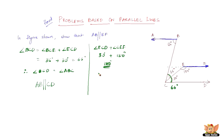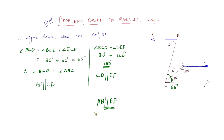This shows that CD is parallel to EF. Since AB is parallel to CD and CD is parallel to EF, we can say that AB is definitely parallel to EF. And hence, we have shown that AB is parallel to EF.